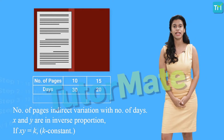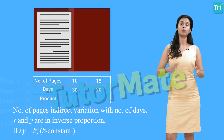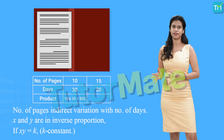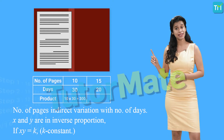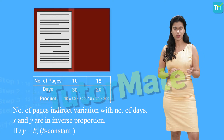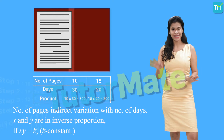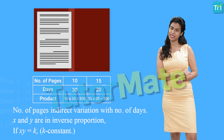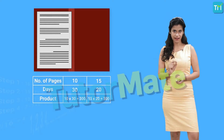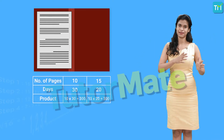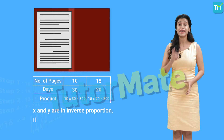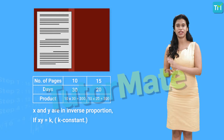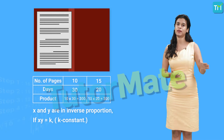Another thing we need to observe here is the product of the two quantities. If we multiply the number of pages we are reading in a day with the total number of days we need to finish the book, we get 10 into 30, that is equal to 300 in the first case. In the second case the product is 15 into 20, which is again 300. So the product of the two quantities remains constant. In this case we say that the two quantities are in inverse variation — the number of pages we read in a day and the number of days needed to finish the book are in inverse variation. In general, two quantities x and y are said to vary in inverse proportion if the product of x and y is a constant, say k. Therefore when x times y equals k, we say x and y inversely vary with respect to each other.